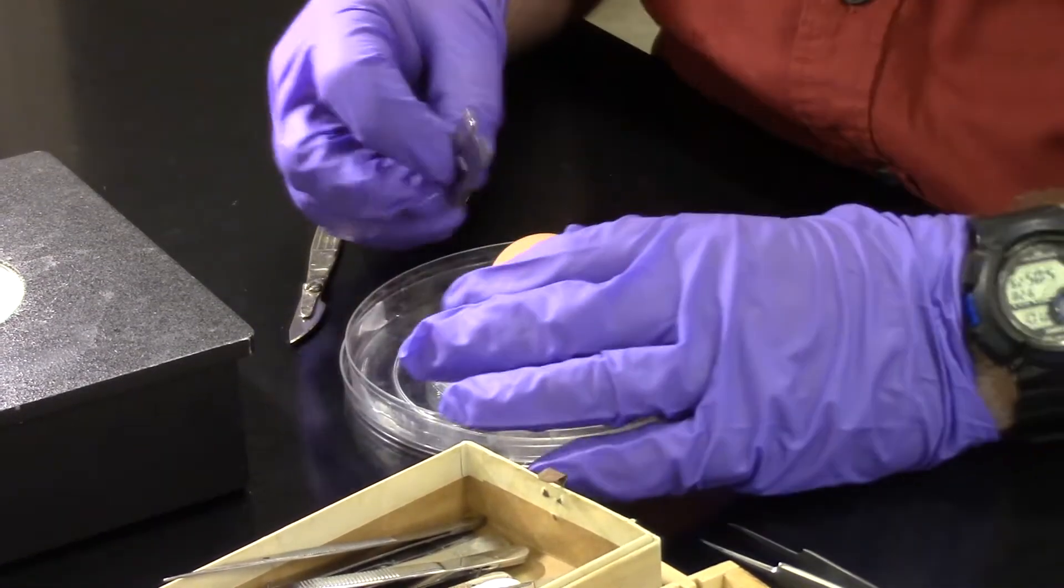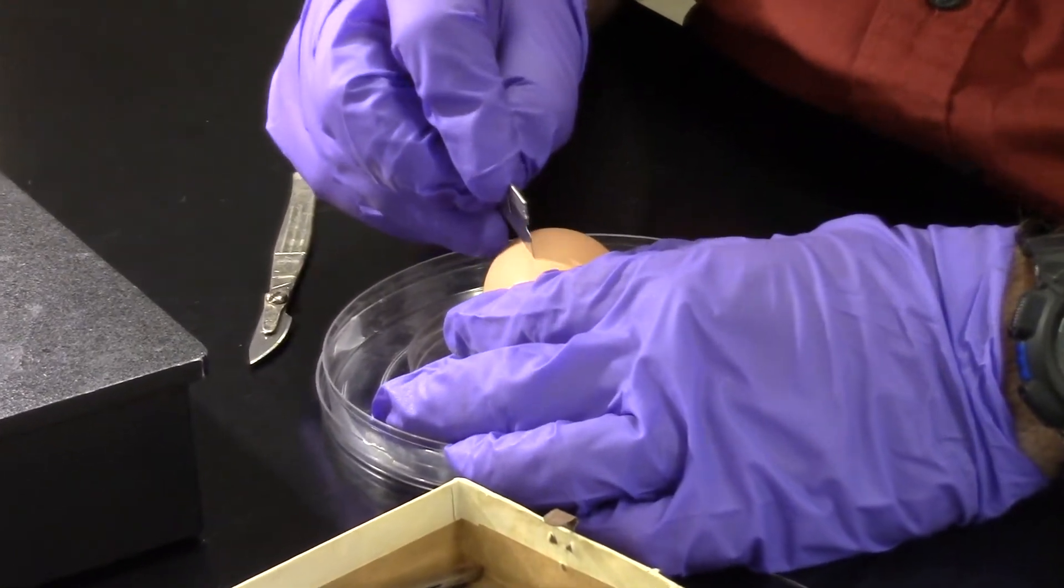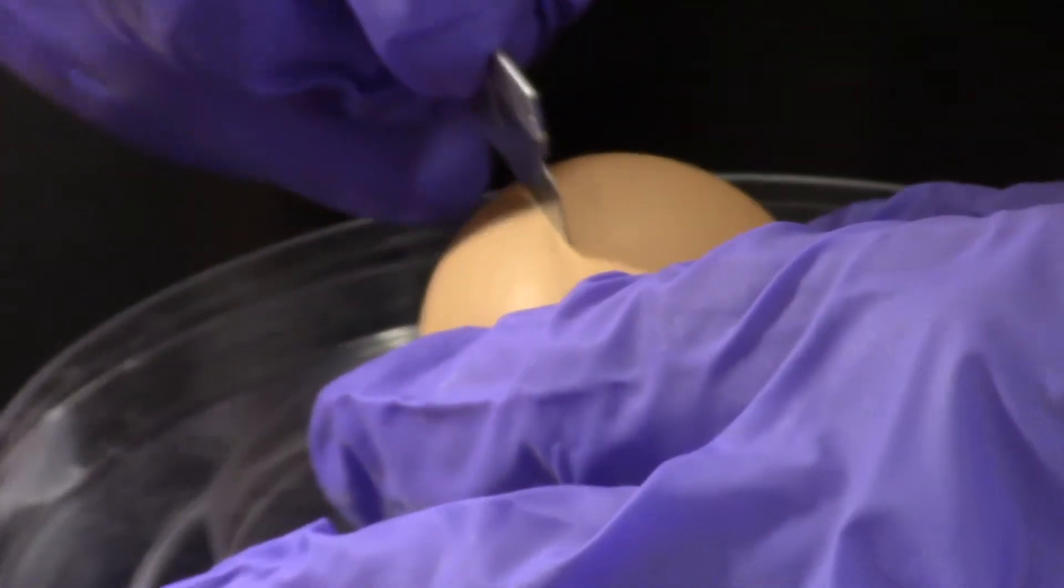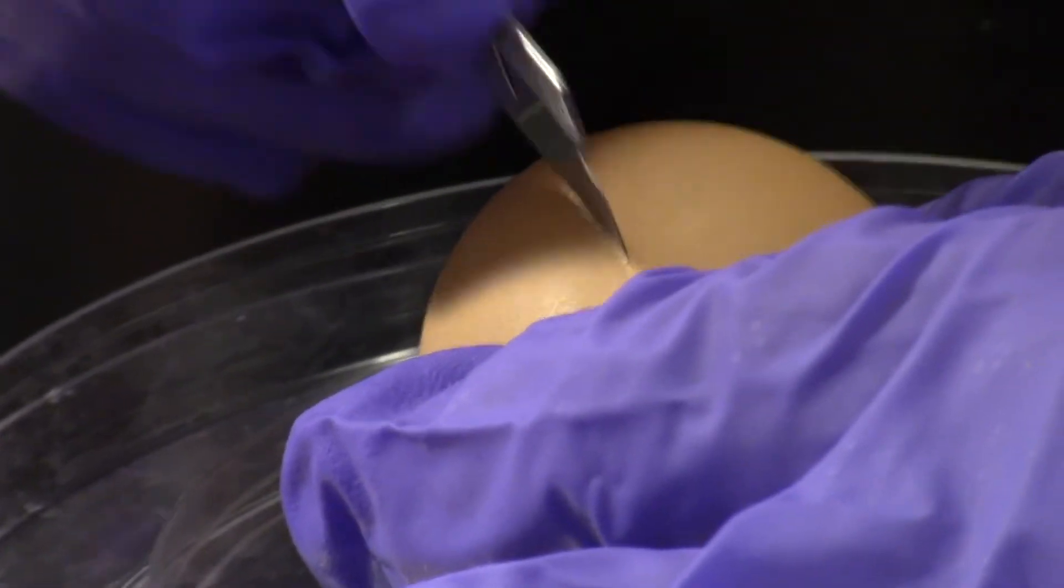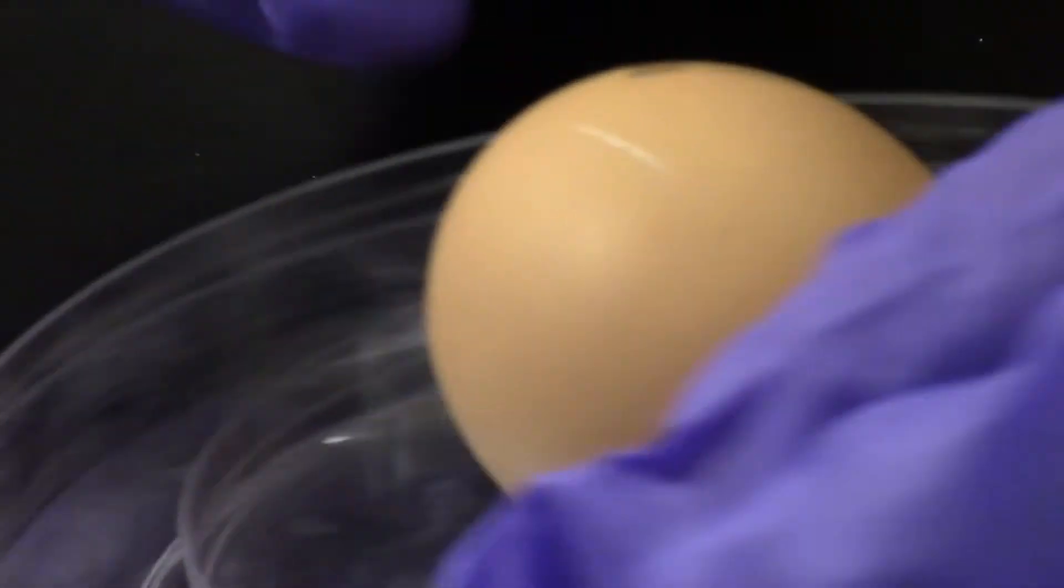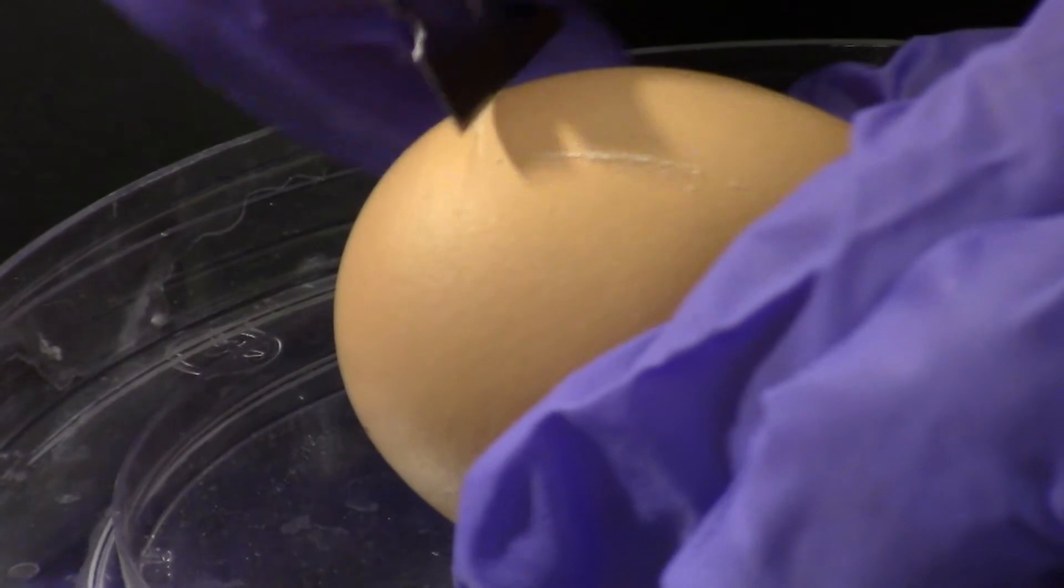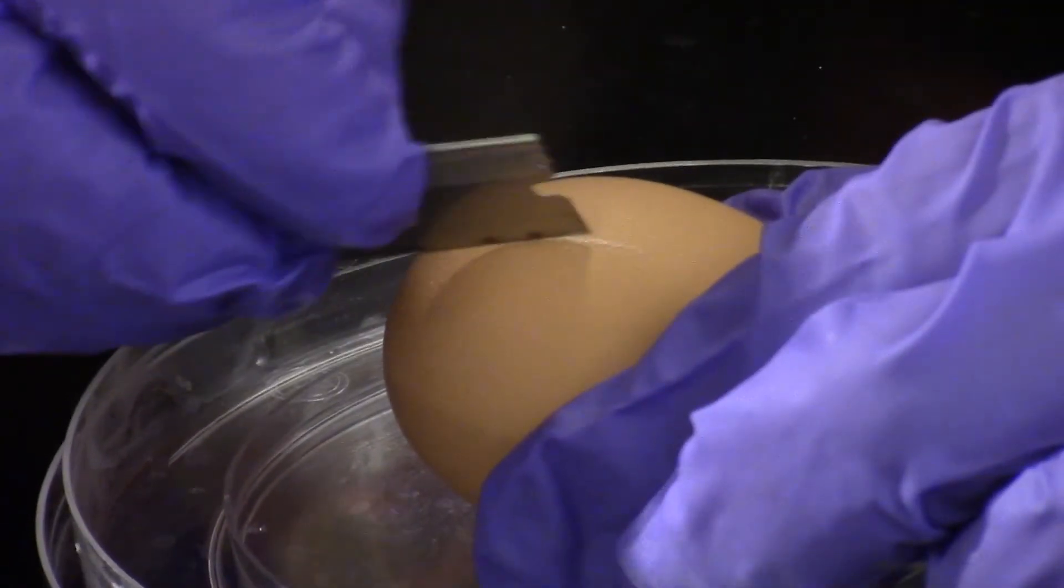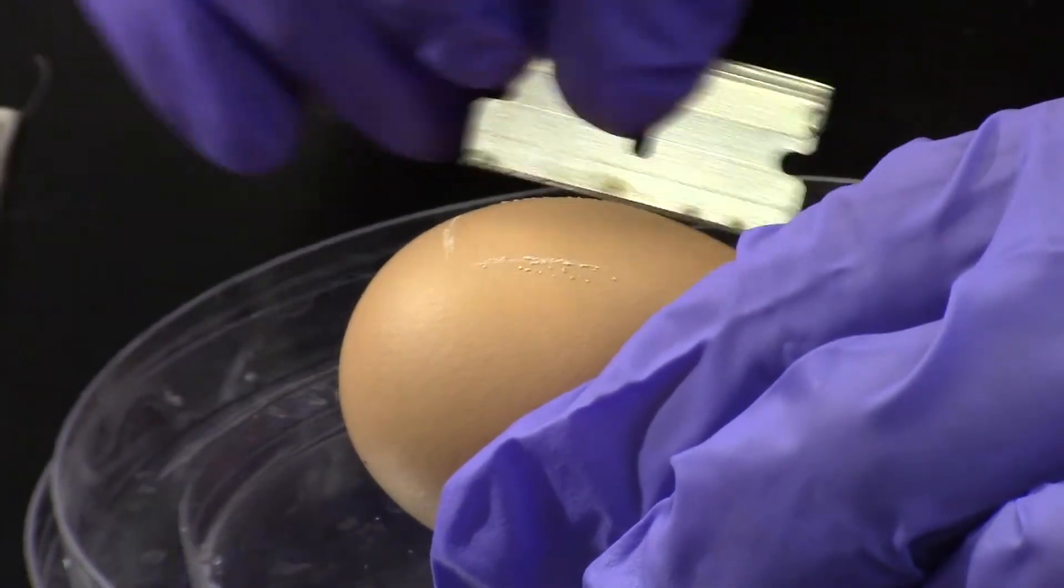I'm going to start here by sawing. Notice I'm not pressing down hard because I don't want to crack the egg. I'm sawing with a very sharp razor blade. I'm actually making a tiny bit of little sawdust here. It's not wooden sawdust, but calcium of the egg. I want to try to get the entire area over top of the chick embryo open so that I can see inside.